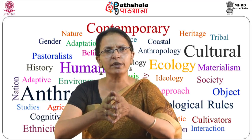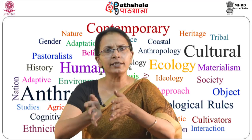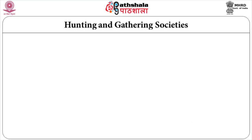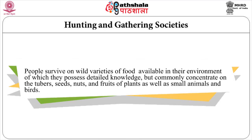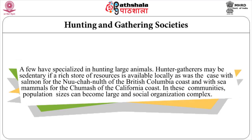Adaptation can also be understood with reference to different societies: hunting and gathering, horticultural, pastoralist and intensive agricultural societies. In hunting and gathering societies, people eat wild varieties of food available in their environment. They do little to actively control the reproduction of exploited species but utilize a great array of plant and animal species. They commonly concentrate on tubers, seeds, nuts and fruits of plants as well as small animals and birds, though a few have specialized in hunting large animals.